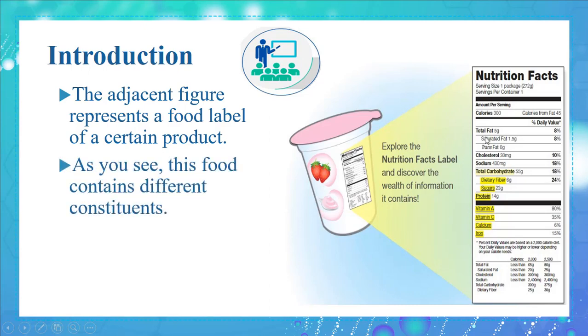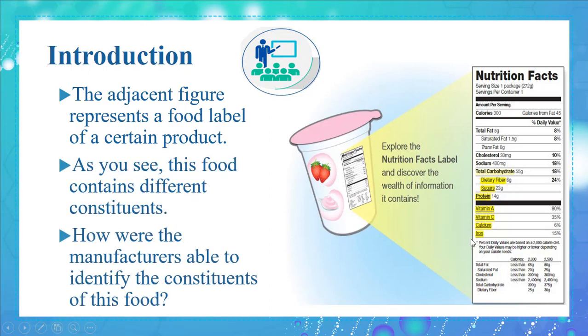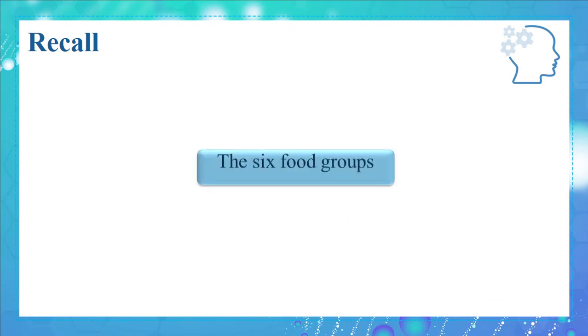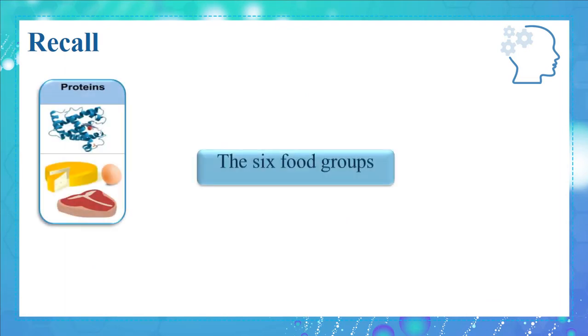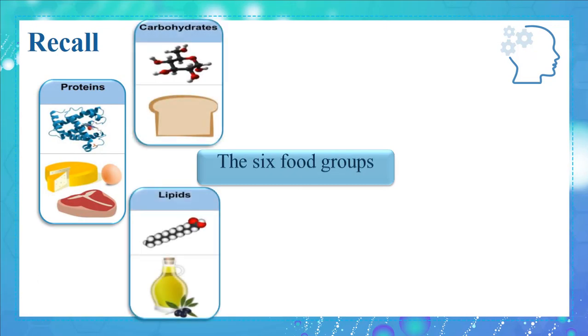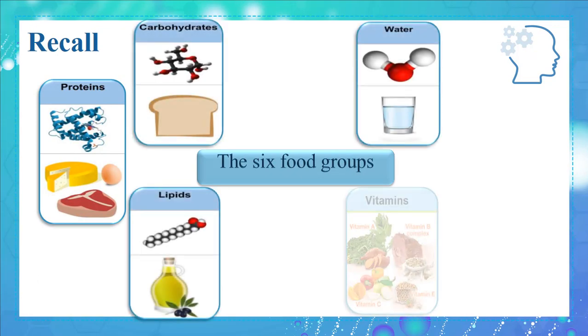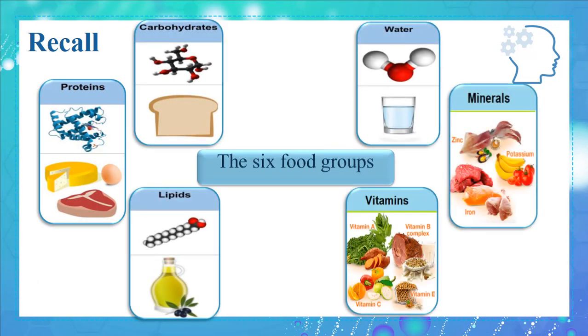As you see, this food contains different constituents. How were the manufacturers able to identify the constituents of this food? In the previous video, we classified food into six food groups. Basically, food is classified into proteins, carbohydrates, lipids, water, vitamins, and minerals.